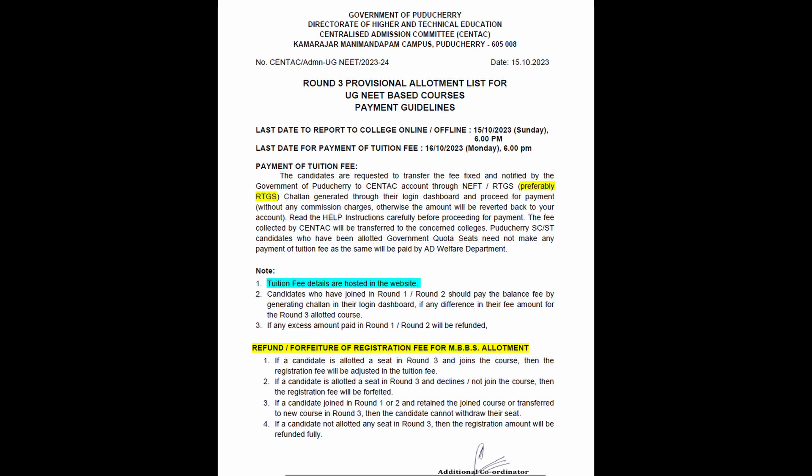If you look at the last date for reporting to college, the last date is 15th October, Sunday, 6 PM, either online or offline. You have to definitely put a mail to the concerned college stating that you are reporting online. Address the email on or before the first date deadline.